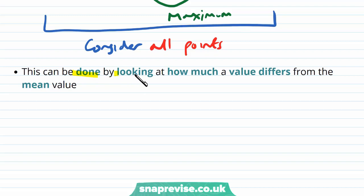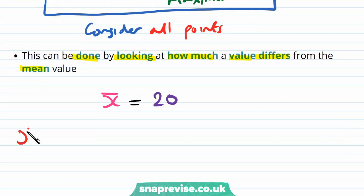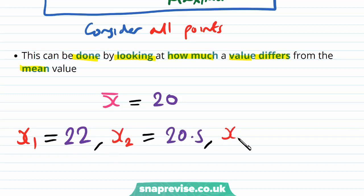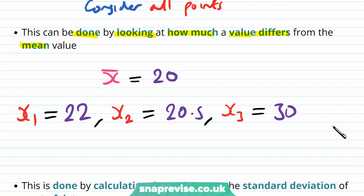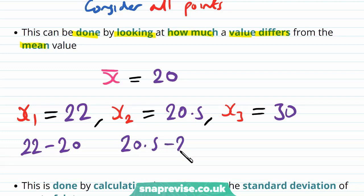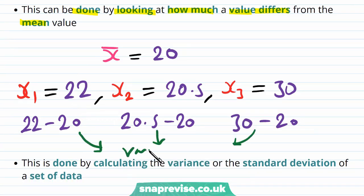This can be done by looking at how much a value differs from the mean value. Let's say our X-bar was equal to 20 — this is our mean. And let's say we have values X1 = 22, X2 = 20.5, and X3 = 30. Then we can examine quantities like 22 minus 20 (i.e. X1 minus the mean), 20.5 minus 20 (X2 minus the mean), and 30 minus 20. We hope this gives us the variation in the data.